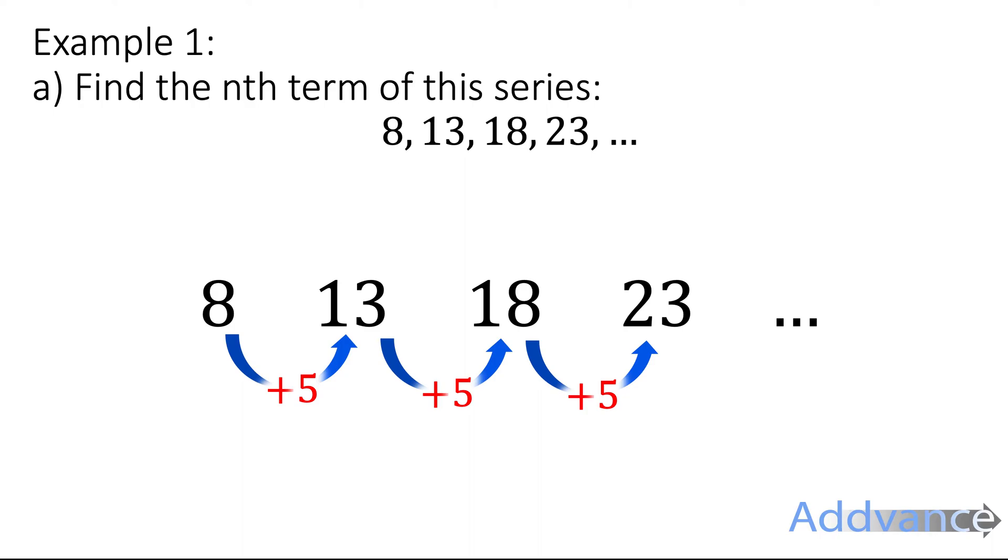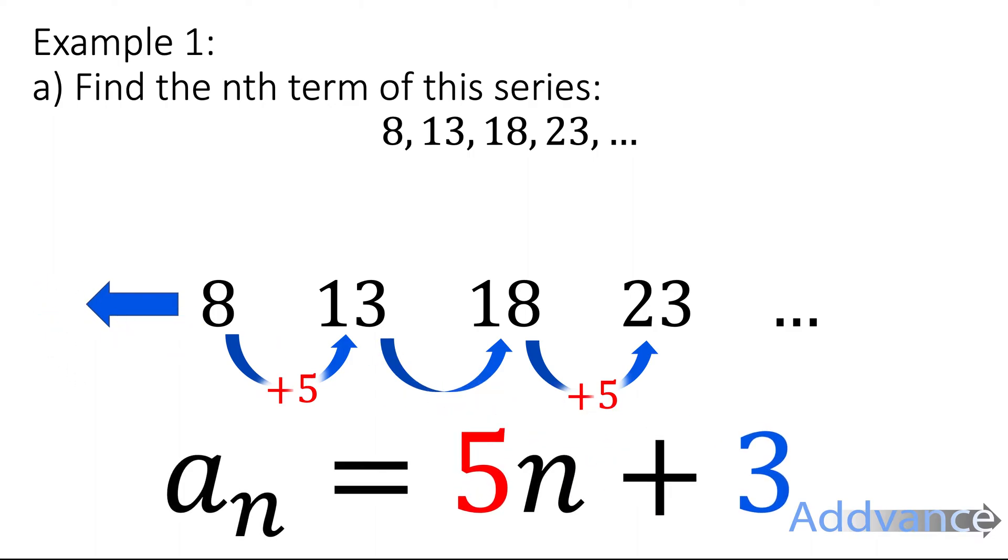And if we went backwards, if we did 8 minus 5 we would get 3. The previous term before the 8 would be 3. And we just substitute those numbers in like this: 5N plus 3. And this gives us the Nth term.